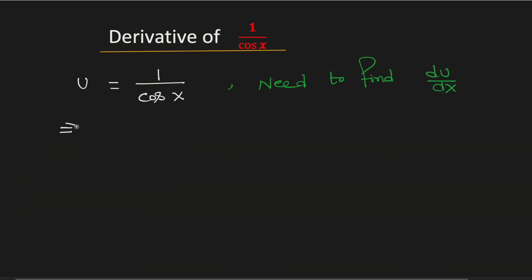Now cross multiplying we will get u times cosine x is equal to 1. Now we will differentiate both sides with respect to x.